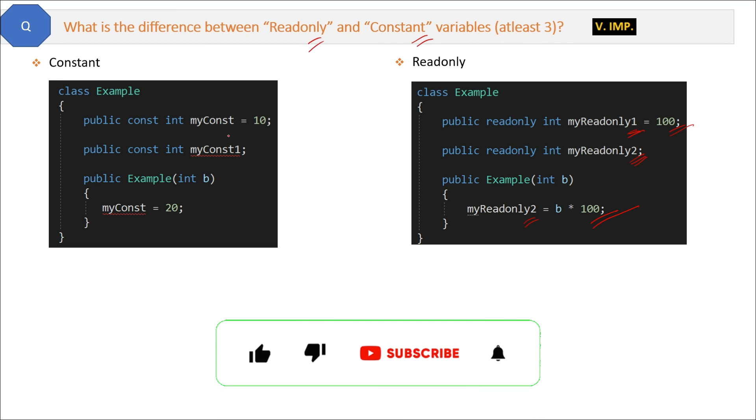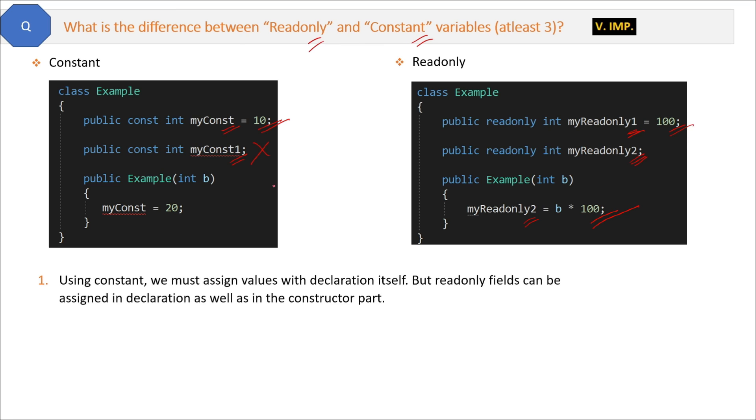Now let's see the constant code. Here we are declaring a const field myConst and assigning a value 10 to it, but when we are trying to just declare the myConst1 variable with const keyword, then compiler is showing error. So this is the difference: using const keyword or constant, we must assign values with declaration itself.